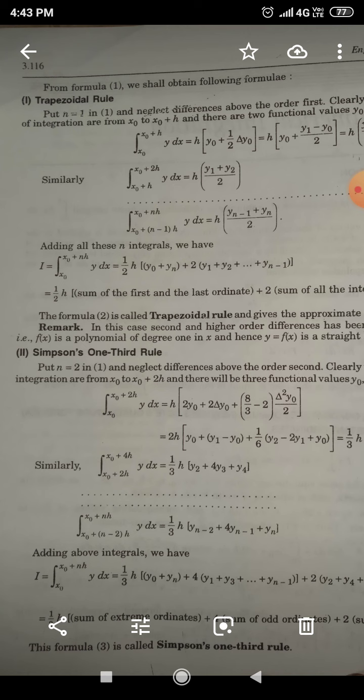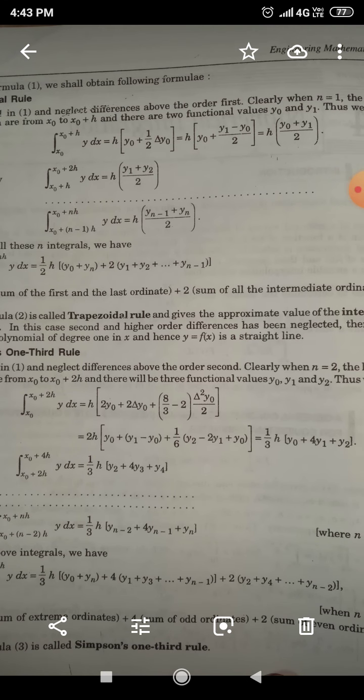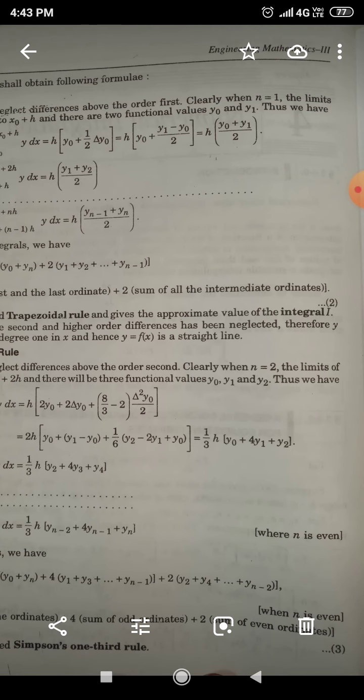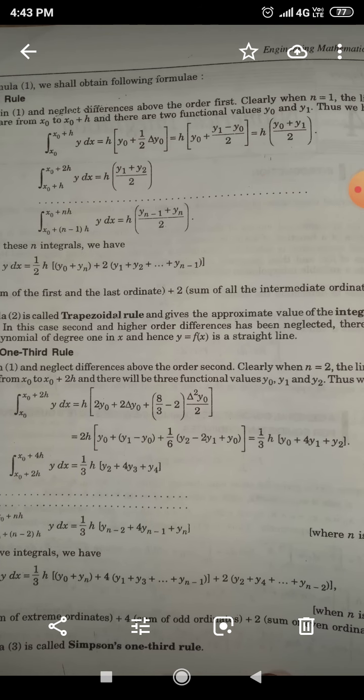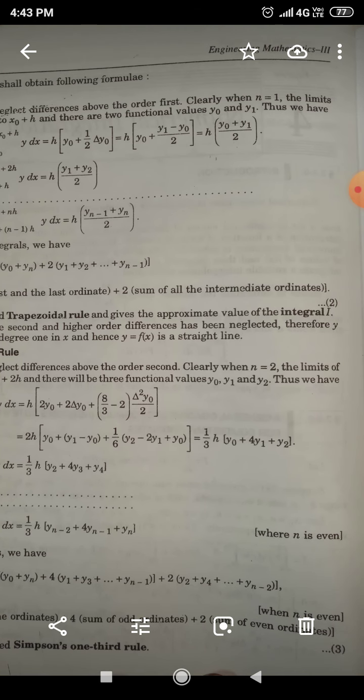So we put N_u equal to 2 in this equation and neglect difference above the order second. Clearly, when N equals 2, the limits of integration are from X_0 to X_0 plus 2H, and there will be three functional values y_0, y_1 and y_2. Thus we have integration x_0 to x_0 plus 2h, it is because n equals 2 so the difference between the limit is 2 subdivision.